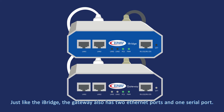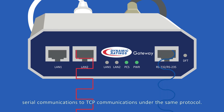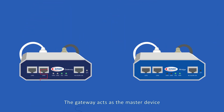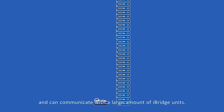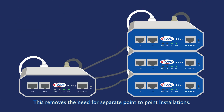Just like the iBridge, the gateway also has two Ethernet ports and one serial port. Pairing a gateway with an iBridge can also convert serial communications to TCP communications under the same protocol. The gateway acts as the master device and can communicate with a large amount of iBridge units, removing the need for separate point-to-point installations.